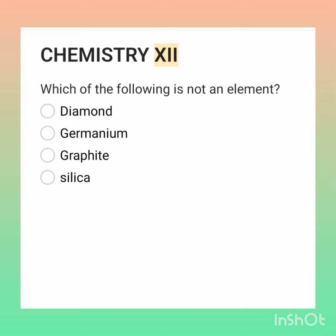Okay, students, your question is: which of the following is not an element? First option: diamond. Second option: germanium. Third option: graphite. Fourth option: silica.